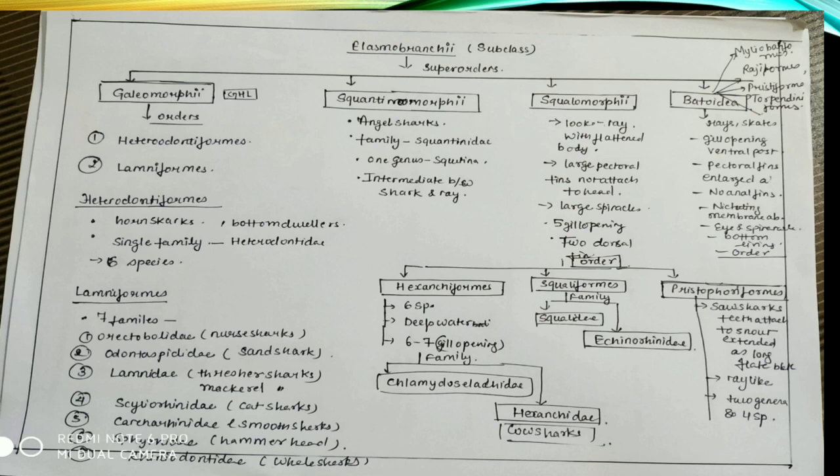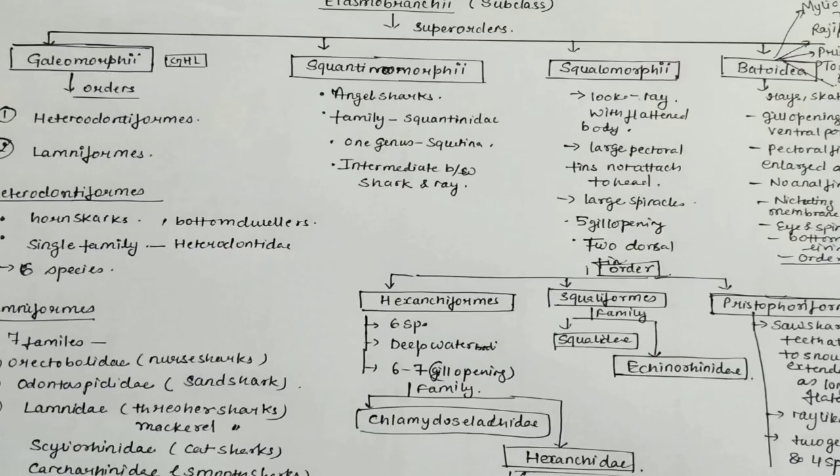Similarly, Squalomorphy. The characteristics are look like rays with bottom flattened body and large pectoral fin not attached to the head. They have large spiracles, five gill openings, and two dorsal fins altogether. These are the characteristics of Squalomorphy.